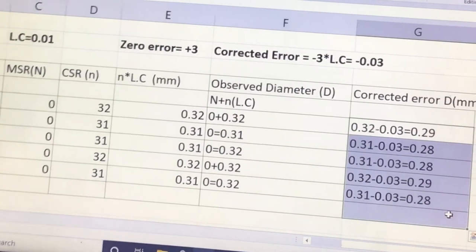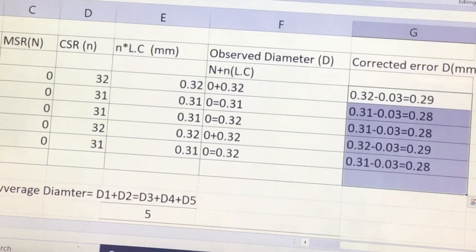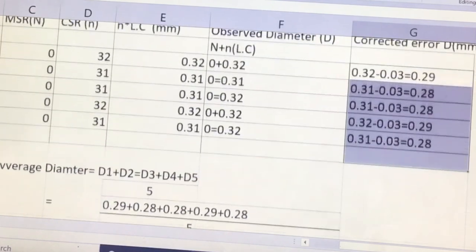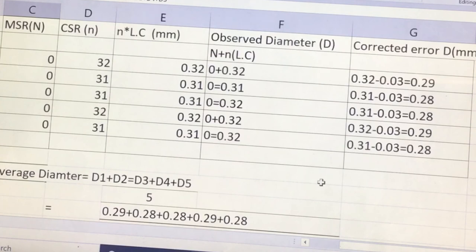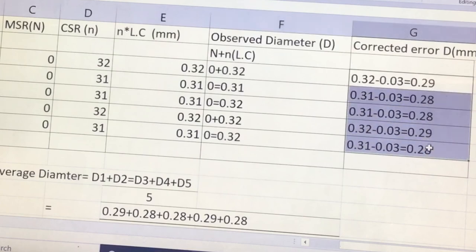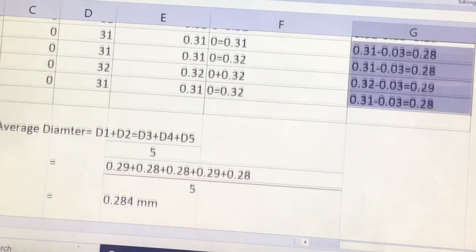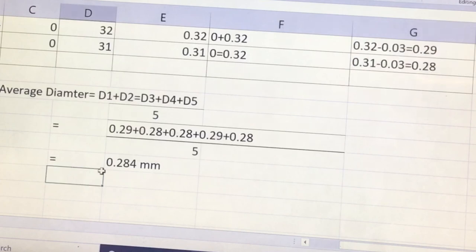And next to this I calculated the average. I calculated the average diameter which is, I added all three divided by five. So the average thickness diameter of the wire was 0.284 millimeter.